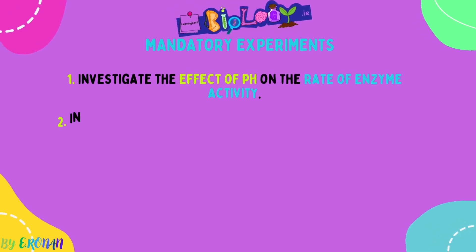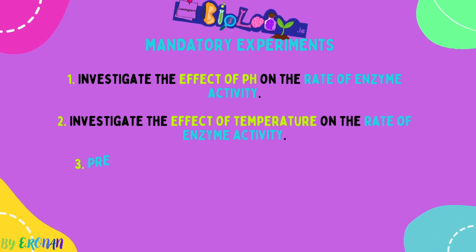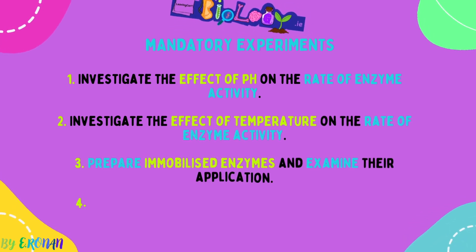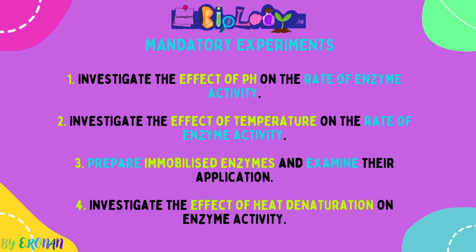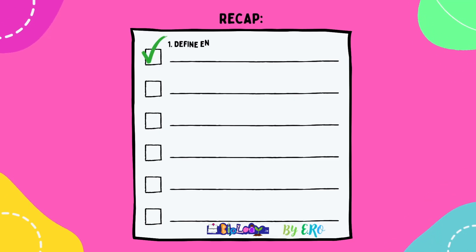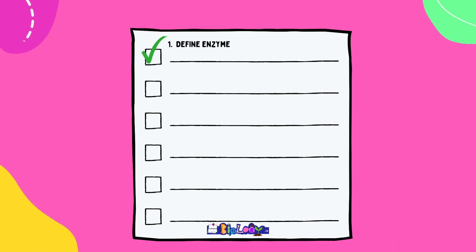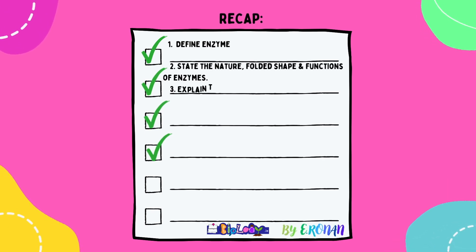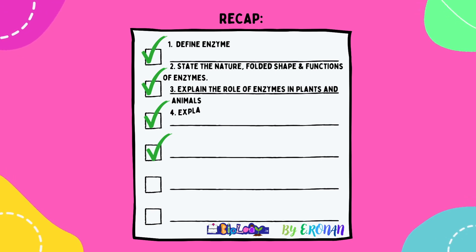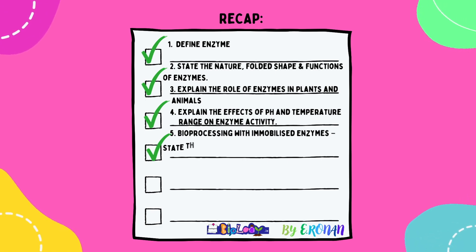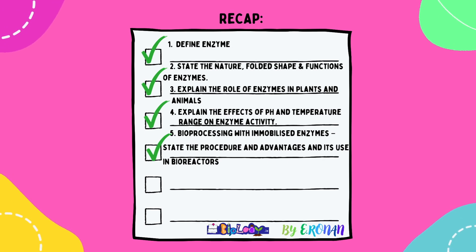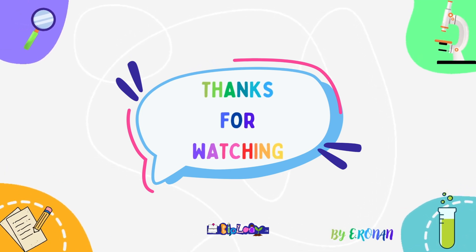Mandatory experiments include: investigate the effect of pH, or investigate the effect of temperature on the rate of enzyme activity; prepare and examine immobilized enzymes — note there are two different procedures for those; and investigate the effect of heat denaturation on enzyme activity. If you'd like to see me cover these in another video, please let me know. Recap: define enzymes — enzymes are proteins and biological catalysts. State the nature, folded shape and functions of enzymes. Explain the role of enzymes in plants and animals. Explain the effects of pH and temperature range on the rate of enzyme activity. Bioprocessing with immobilized enzymes — state the procedure, advantages and use in bioreactors. Please like, subscribe, share your comments and suggestions for future videos, and head on over to leavingcertbiology.ie for more.